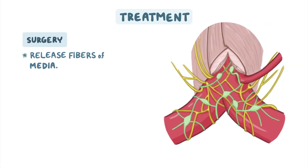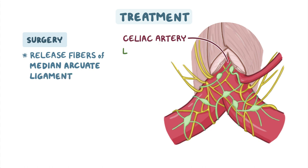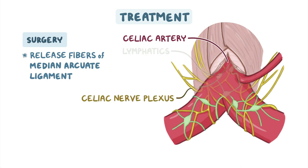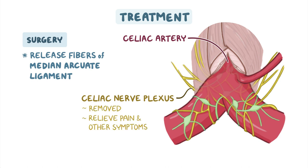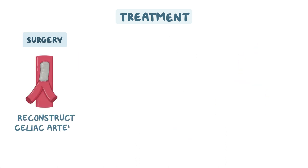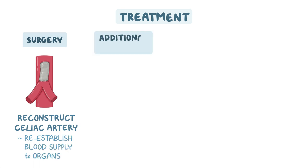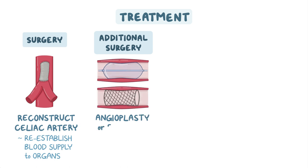Treatment of MALS typically involves surgery to release the fibers of the median arcuate ligament compressing the celiac artery, the overlying lymphatics, and soft tissue. In addition, the compressed celiac nerve plexus and scar tissue may be removed to relieve pain and other symptoms. Another option is to reconstruct the celiac artery to reestablish blood supply to the organs. In some cases, additional surgery, angioplasty, or stenting may be needed after the initial surgery.